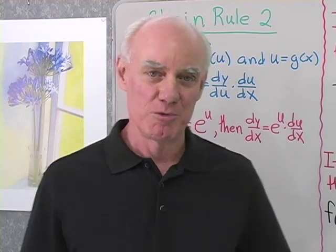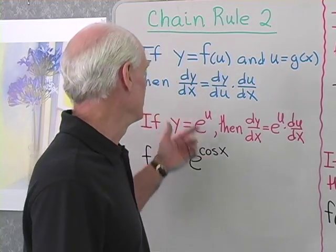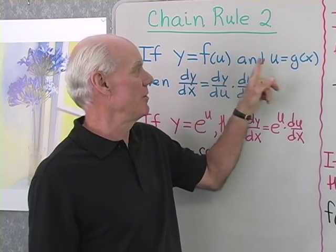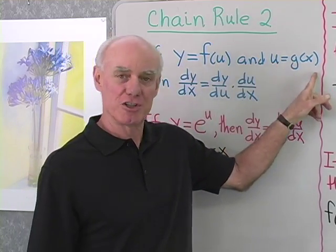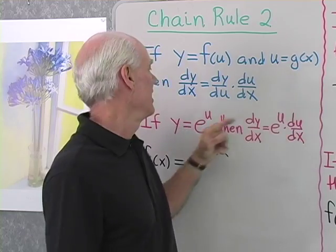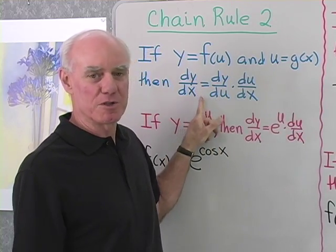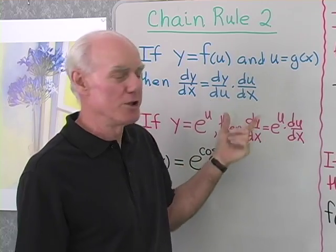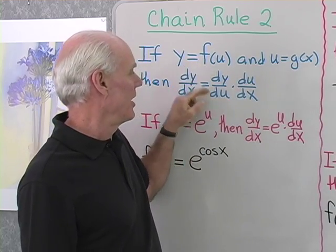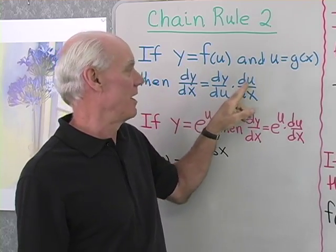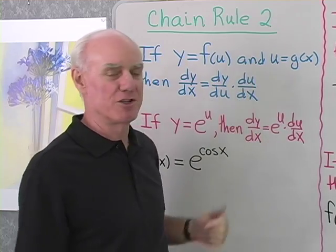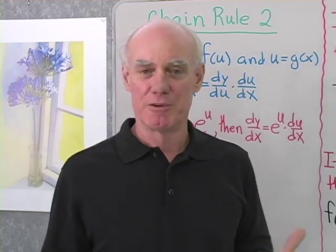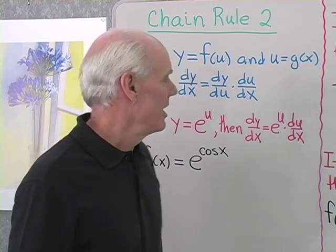We want to work a few more problems with the chain rule. Just to review, the chain rule says that if y is a function of u and u is a function of x, then we can differentiate y with respect to x by going through u and writing dy/du times du/dx. So first we differentiate y with respect to u, then we differentiate u with respect to x.